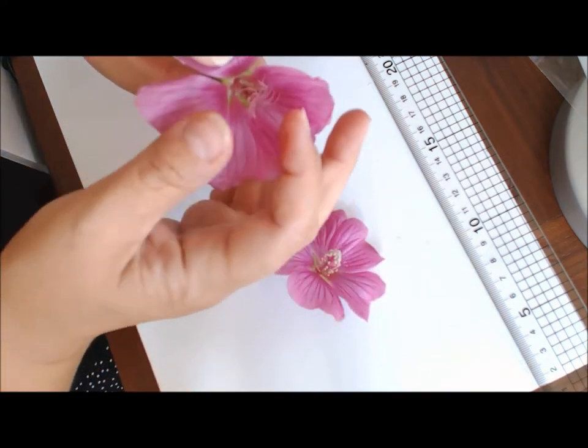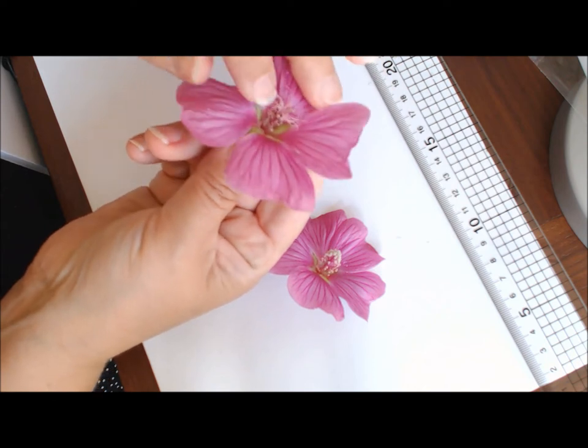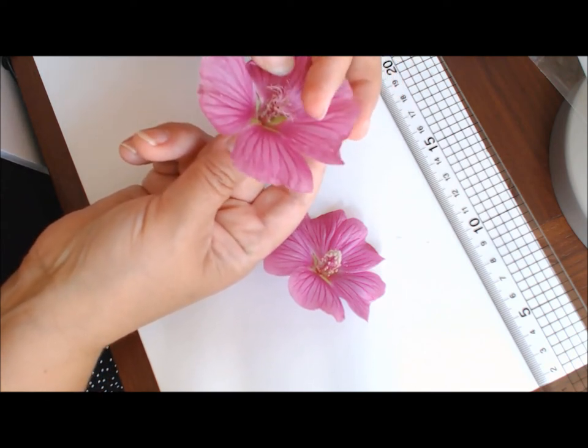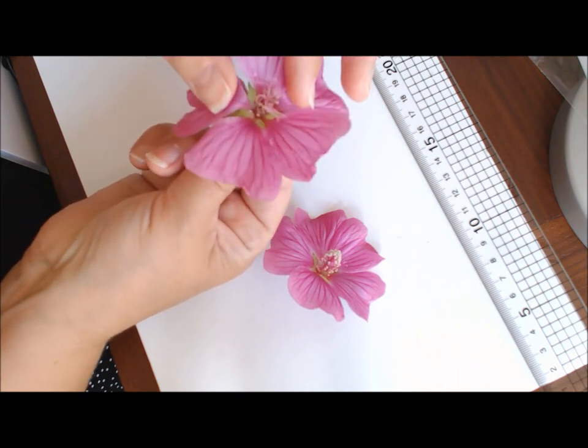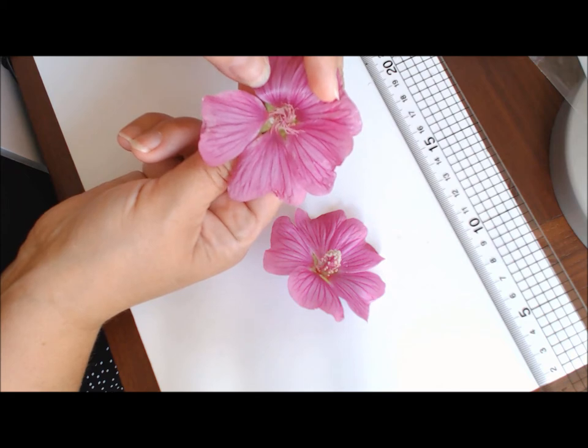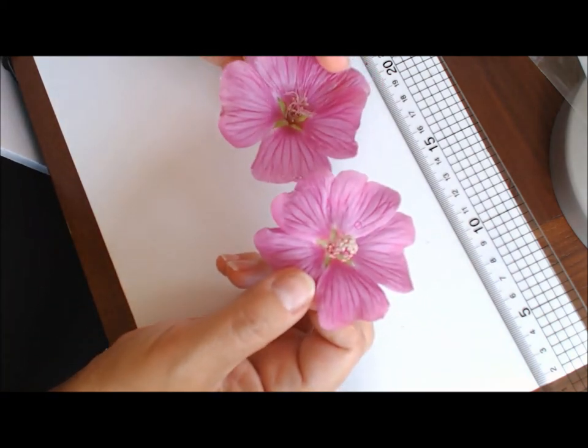On this one, which is an older flower, you can see the stigma here has emerged from that column. This flower has two phases. It has a male phase which comes first and a female phase which comes later.